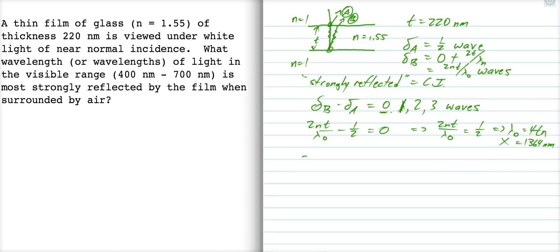So let's try the next solution. Let's try 2nT over lambda naught minus a half equals 1. Okay? So, that's 2nT over lambda naught equals 3 halves, which is lambda naught is equal to 4TN over 3. Oh, that's 455 nanometers, which is in the range of visible light, so that's a good solution.